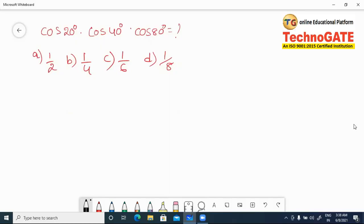To answer this question, we use one trick: cos θ × cos(60° - θ) × cos(60° + θ). This is similar to sine, which is 1/4 sin 3θ. For cosine, it is 1/4 cos 3θ. Here, θ is the least value, which is 20°.